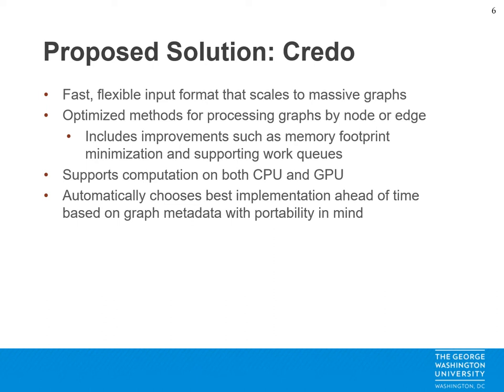To address these issues, we propose our solution, CREDO. With it, we make the following contributions: we provide a fast, flexible info format that scales to massive graphs beyond the thousands of nodes that existing implementations support — in fact, it can scale to millions and billions of edges. We also provide optimized methods for processing graphs by nodes or edges, including improvements to the memory footprint and supporting work queues to optimize performance. We support these methods on CPU and GPU platforms. And finally, we provide a mechanism for automatically choosing the best implementation ahead of time based on graph metadata with portability in mind.